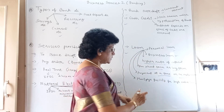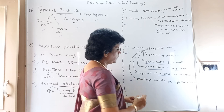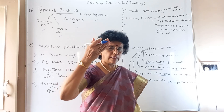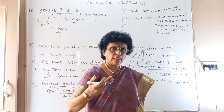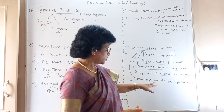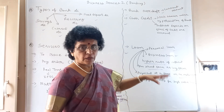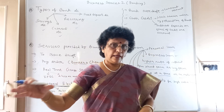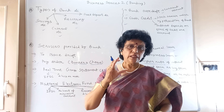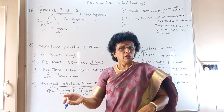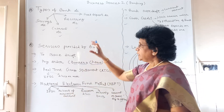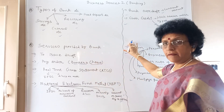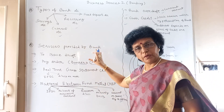For higher value loans taken in crores, you need to mortgage something — your plant, machinery, land, or building — some big asset of equivalent value must be mortgaged. In this way, the bank provides all these facilities and works for us. Thank you.